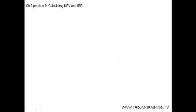Problem 5, Chapter 9 asks to calculate the discounted payback period. The initial project cost is $15,000 and it has annual cash flows of $4,300 for six years. What is the discounted payback period if the discount rate is zero percent, five percent, and nineteen percent?